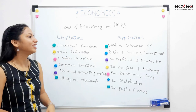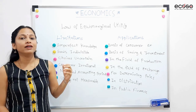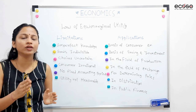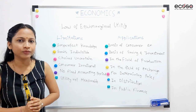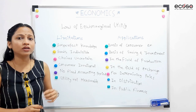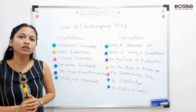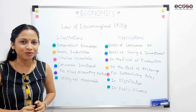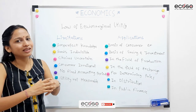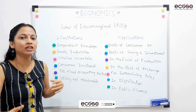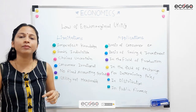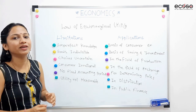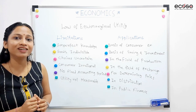Second limitation is goods are indivisible. Yahan assume kiya ki goods divisible hain — matlab koi bhi commodity hum log chote-chote parts mein divide kar sakte hain. Haan, kuch cheezon ke baare mein possible hai. But this law cannot be fully experienced because small units mein divide karke utility measure nahi kar sakta.